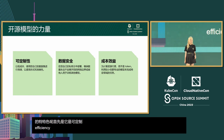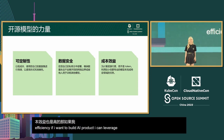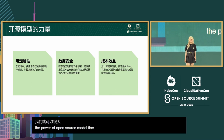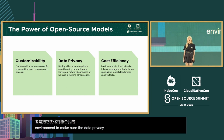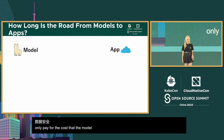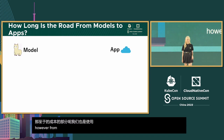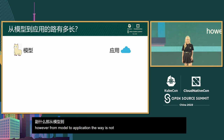If I want to build an AI product, I can leverage the power of open source models, fine-tuning them with my own dataset and deploying in my own environment to ensure data privacy, and only pay for the cost that the model needs. However, from model to application, the way is not always straightforward.